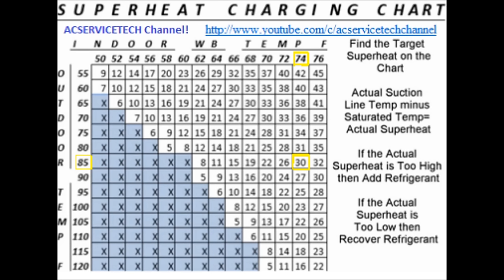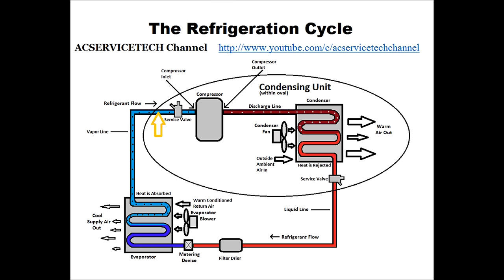Depending on the outdoor temperature and the wet bulb temperature inside, on one day it could be a very high target superheat that we have to set the refrigerant charge to. On a cooler, less humid day, the target superheat would end up being lower. You have to set it to the outdoor temperature and the wet bulb for that day on the target superheat chart. You need to set that superheat correctly so that on a cooler day you don't have liquid getting into the compressor. Superheat is the temperature increase in vapor form, set at the service valve next to the compressor as total superheat.